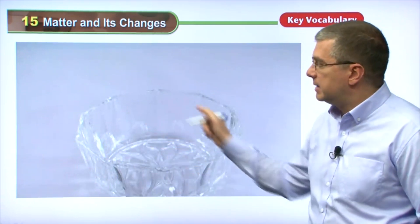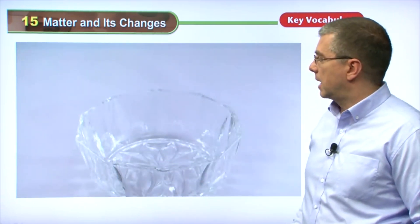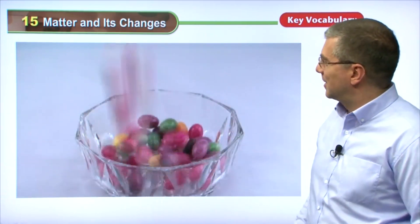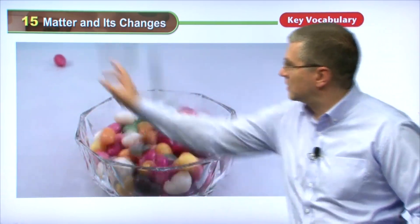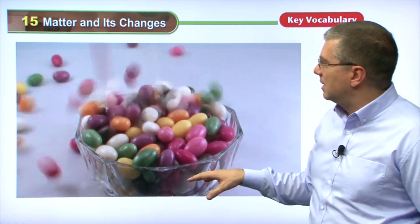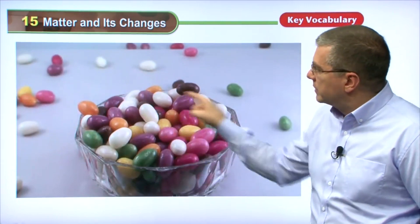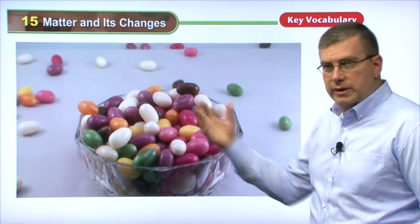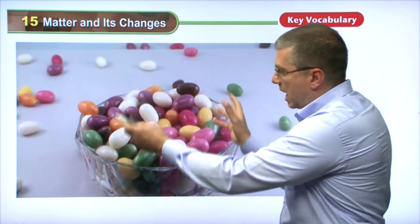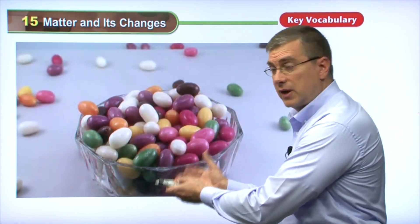Here we have a candy dish. What's going to go inside? Here comes the candy! Try to catch those pieces of candy — take them and eat them. So we have a lot of different types of candy. There's the same type of candy, but what happened was there are different colors. We're taking different colors of candy and mixing them together. What we have is a mixture of different colors of candy.